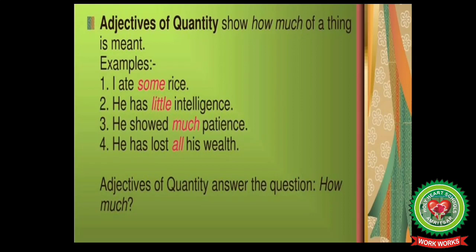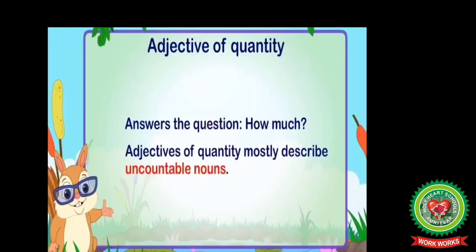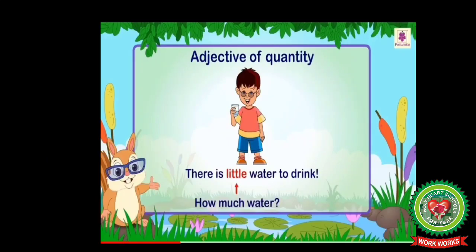Students, remember: adjectives of quantity mostly describe uncountable nouns. For example, there is little water to drink — how much water? Little. Little is an adjective of quantity, and 'water' is used as an uncountable noun.